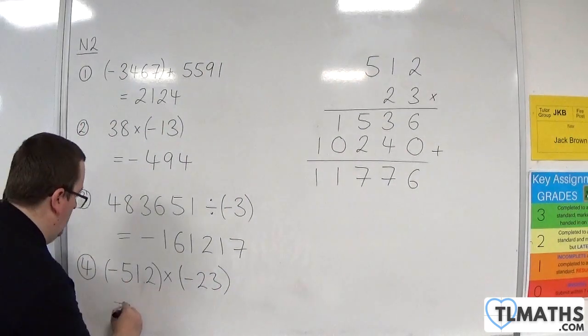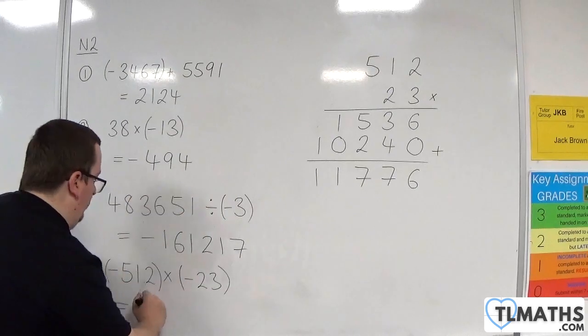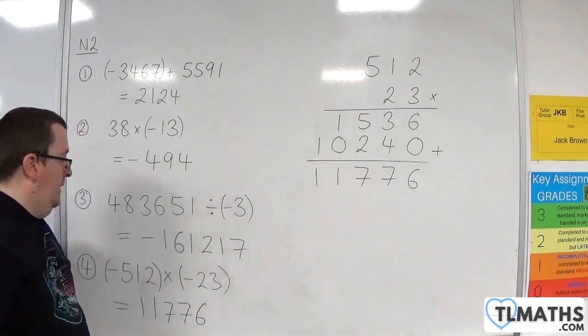And so our answer, because we've got a negative times a negative, will be a positive. So it will be 11,776. And that's my answer.